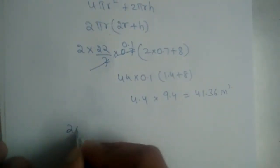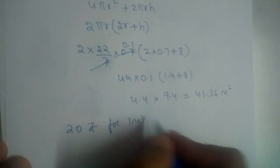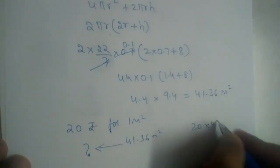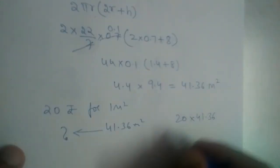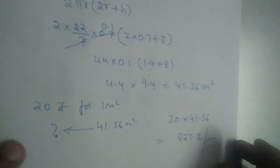Now, painter is charging 20 rupees for 1 meter square. So for 41.36 meter squares, how much will be the amount? We need to multiply 20 into 41.36. So this will give us 827.2 rupees. Let's do this. Thank you.